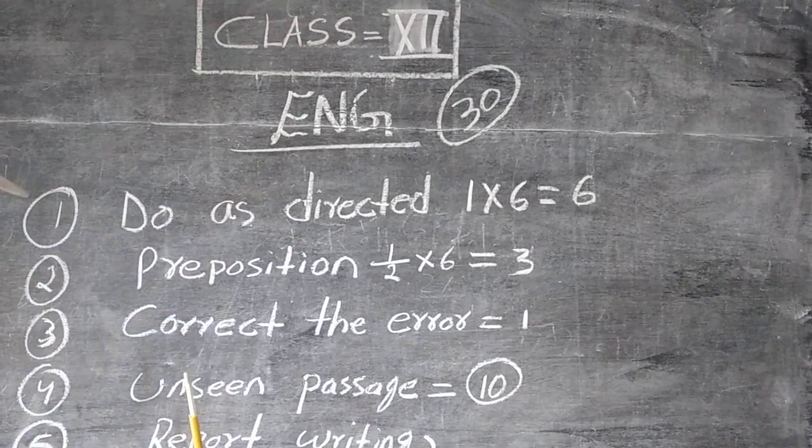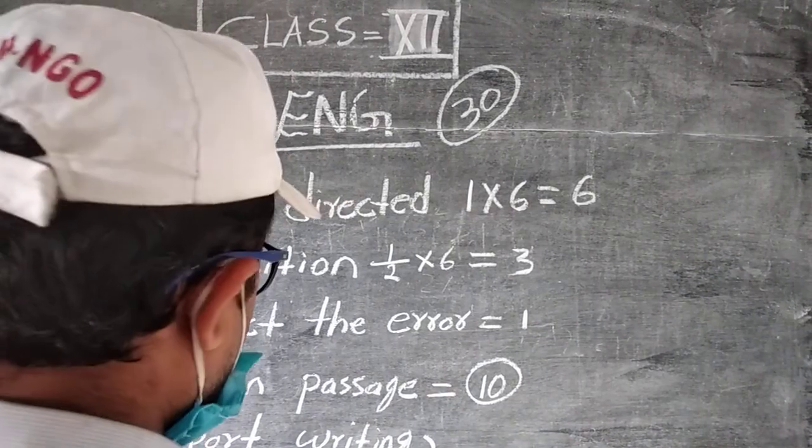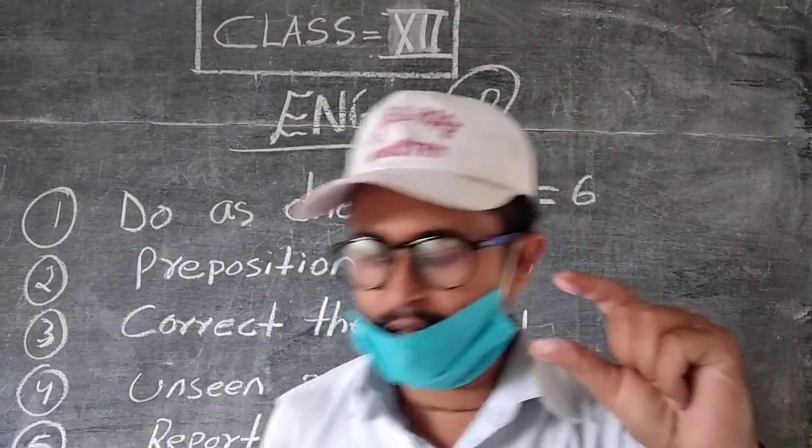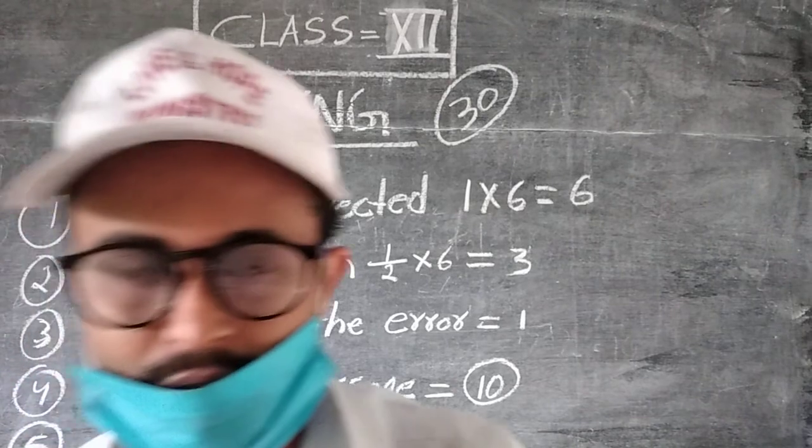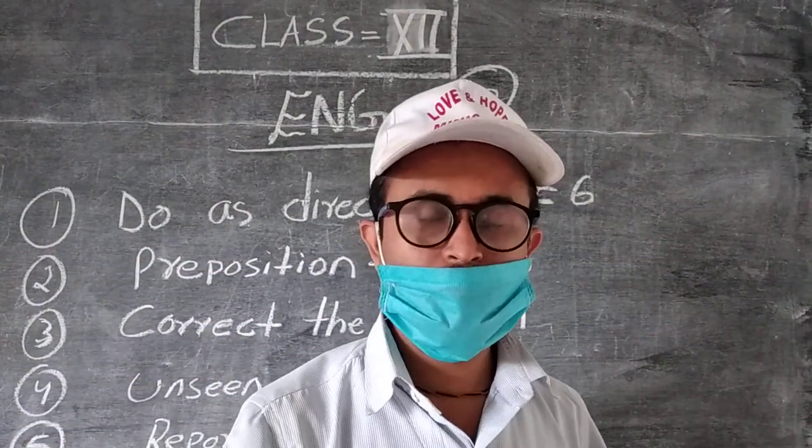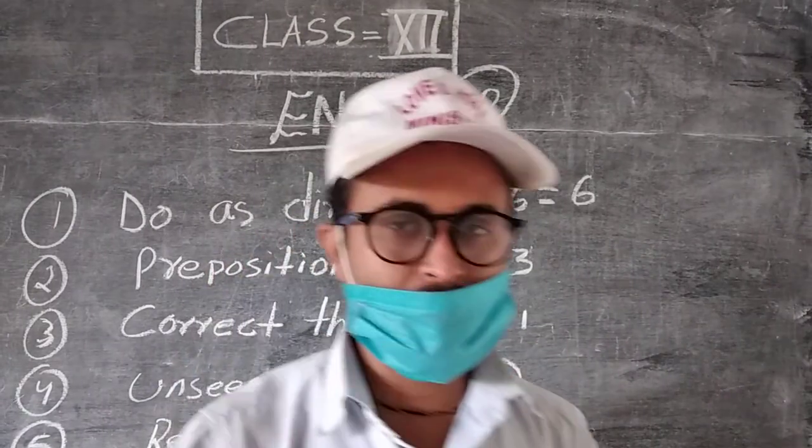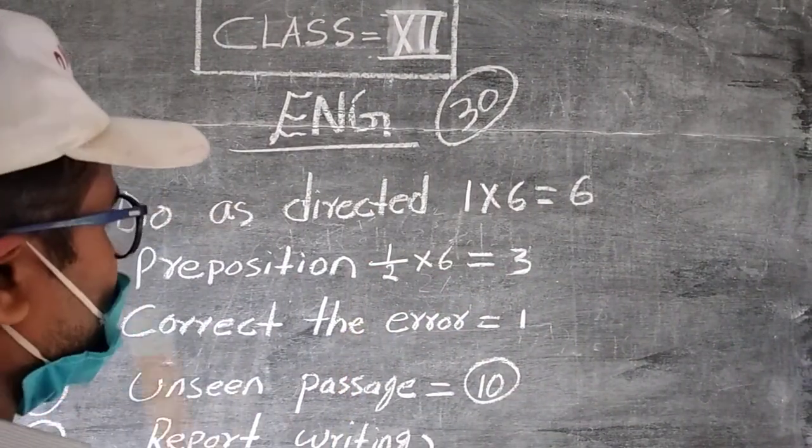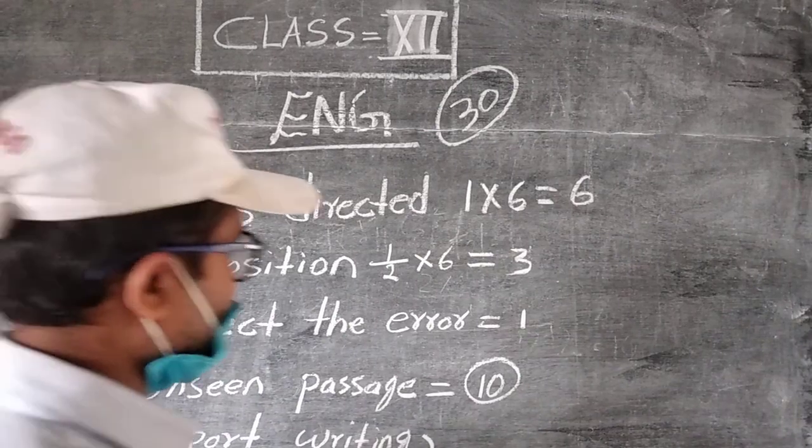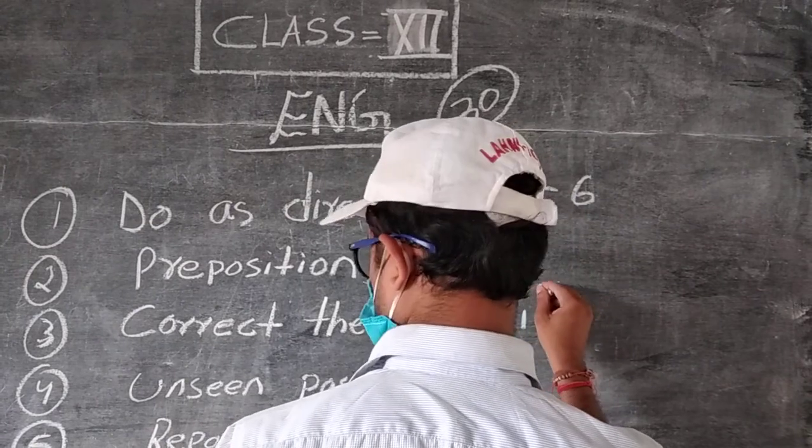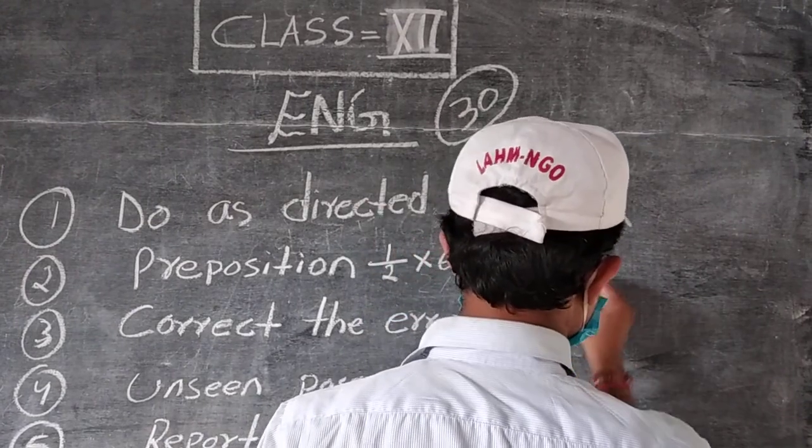Number five: report writing or letter writing. Both will be there - report writing and letter writing. The choice will be yours, either choose a report or letter, and they will give you 10 marks for that.